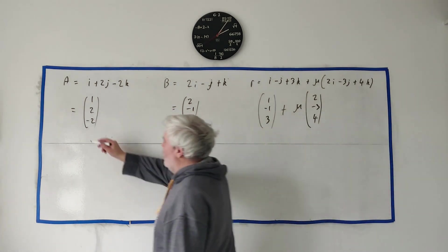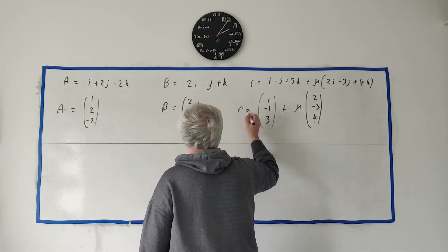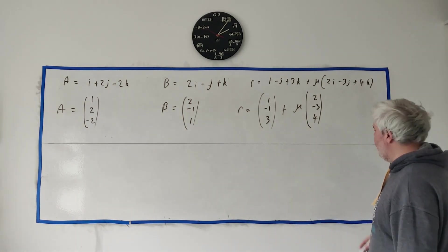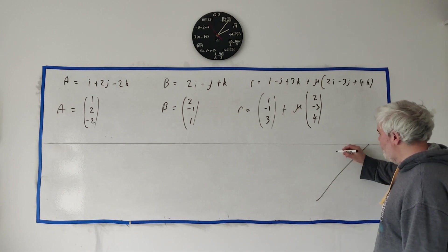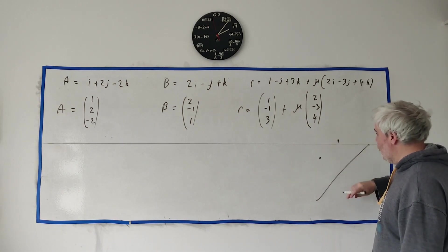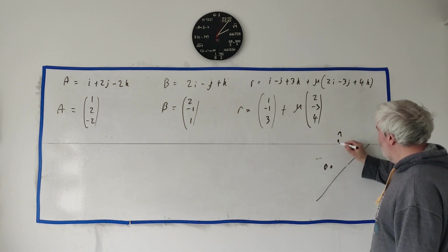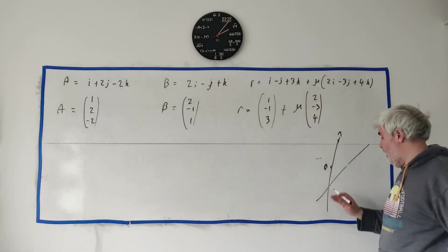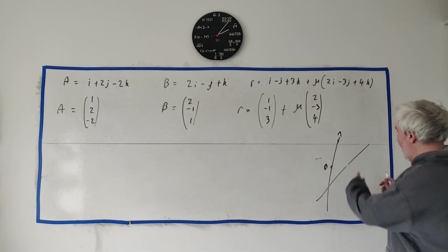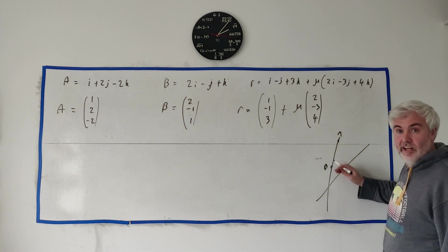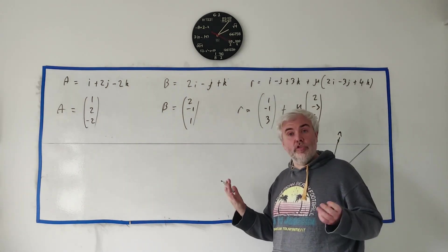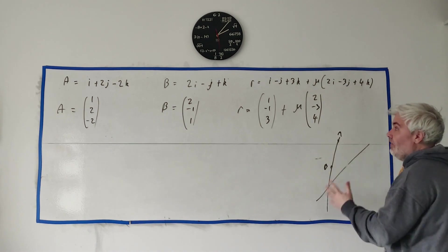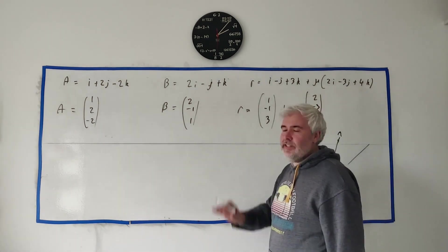Now, let's set up what they're actually asking us. All my drawings are going to be two-dimensional because that's all I can draw. They've given us a line, and they've given us two points A and B. We need to show whether these intercept. Remember, this is in three dimensions, so these could hit each other or they could miss by a mile. We have the equation of one line, so we need to find the equation of the line through A and B, and then put those two equations together to see if they intercept. Basically, we need to find the equation of line AB.